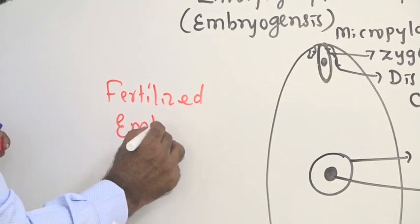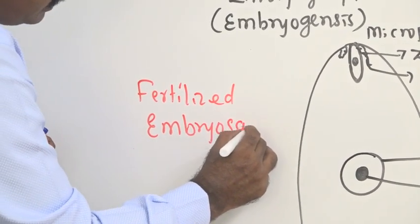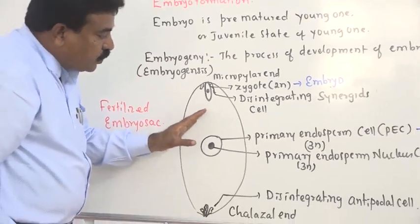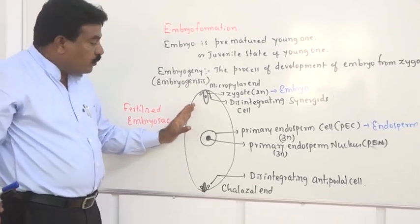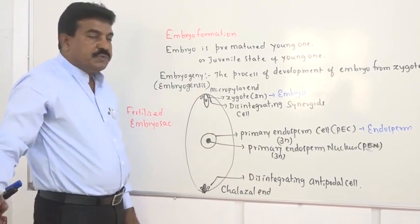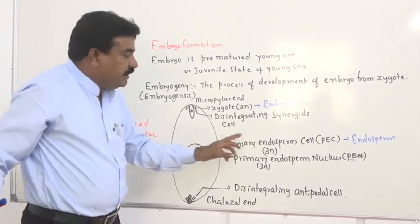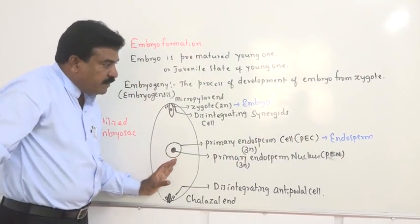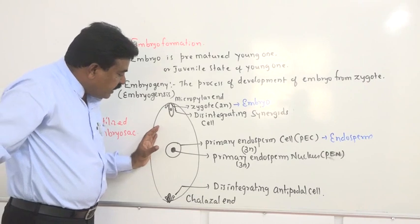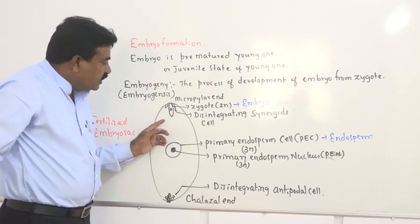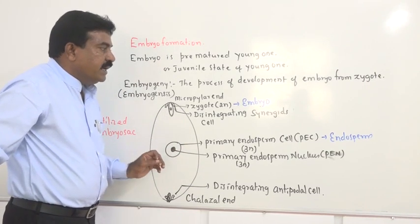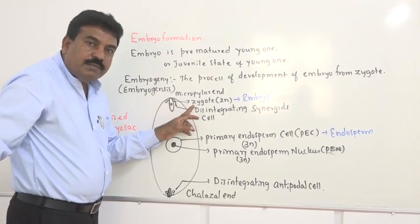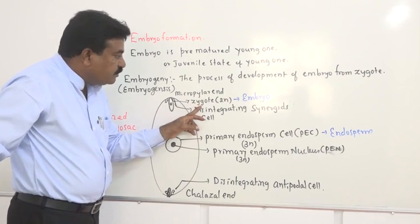In the fertilized embryo sac, two major changes occur. One is endosperm formation, which takes place in the primary endosperm cell and develops into a massive tissue that helps for nourishment of the embryo. The zygote — a diploid cell formed by the union of egg and sperm — now develops into the embryo.